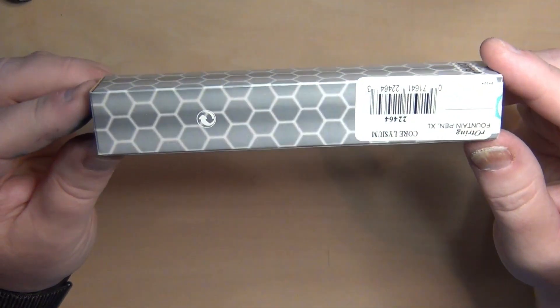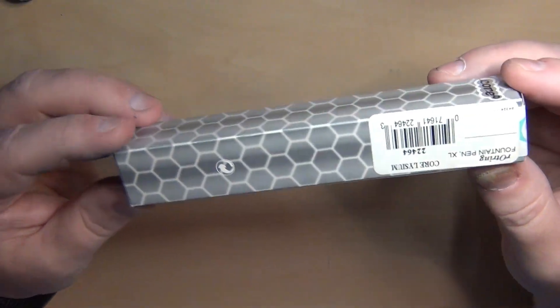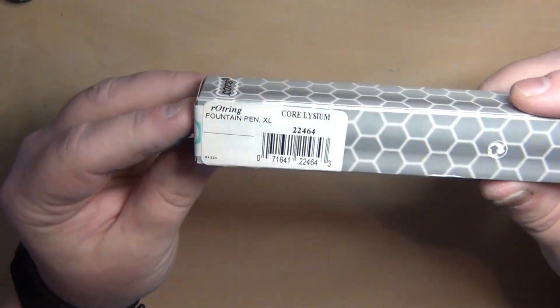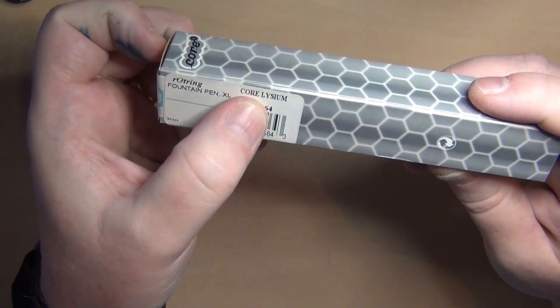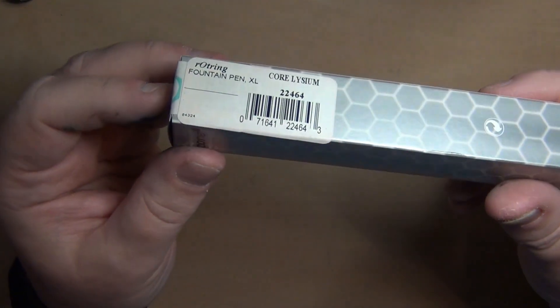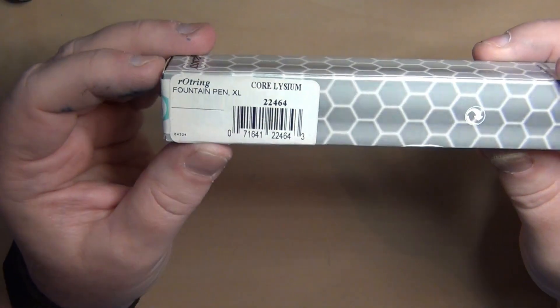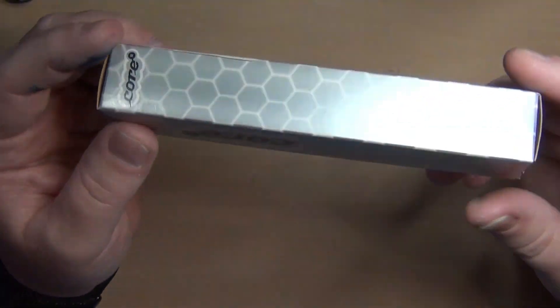This is very different, very different from anything I've got in my collection. So the Rotring Fountain Pen XL Core Lyseum, that's the model that I've got here on the sticker for this particular pen.